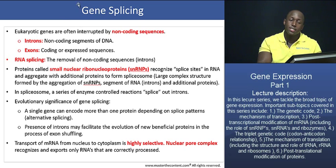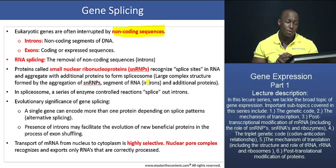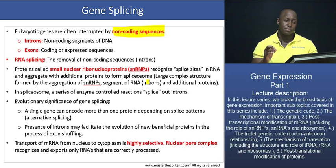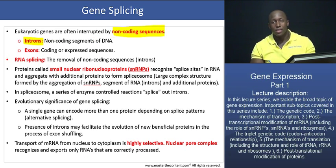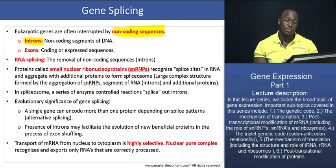Eukaryotic genes are often interrupted by what we call non-coding sequences. Segments of DNA within a gene — because remember, a gene is just basically a sequence of nucleotides along a DNA molecule — that are not expressed in the final gene product are called introns. An intron is a non-coding segment of DNA. That segment of DNA will be transcribed to form mRNA, but it will not be expressed in the final protein product, in the final gene product.